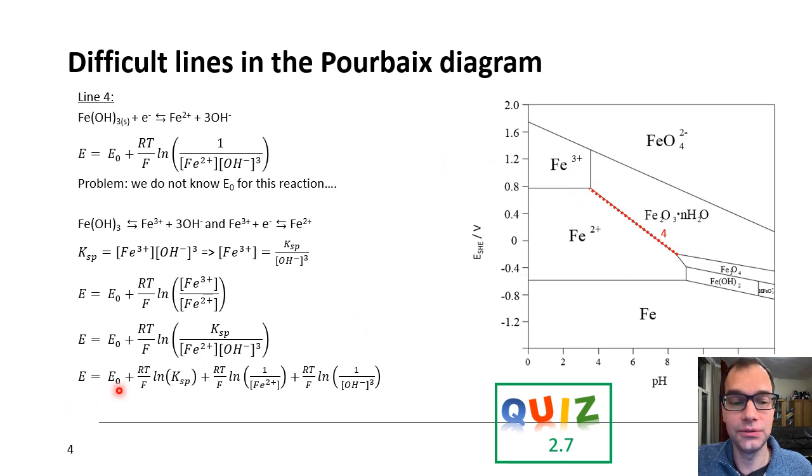So, then we need to do some rewriting. So, we say, E is E0. And we basically take out the terms from the natural logarithm. And we can start filling those in. So, 0.77, the ln of the solubility, 2.27, and so on. And then, finally, you find that the equation for this reaction is... So, the potential is 1.33 minus 0.177 multiplied by the pH.